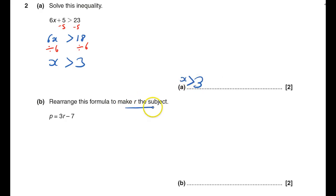Rearrange just to make r the subject. That means I need to have r equals. What I always like doing is switching around so the r bit is on the left-hand side to start off with, so you have 3r minus 7 equals p. And then I want to get just the r